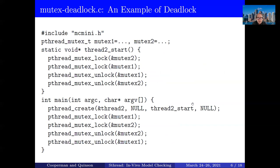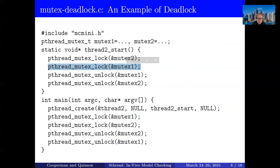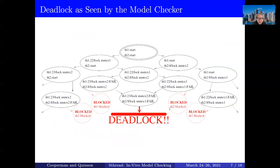A brief reminder of some basics. Here's a simple deadlock example. We have an initial thread that creates a second thread running thread2_start. The second thread decides to lock mutex2, then mutex1. As long as it proceeds in order, everything is good. But suppose it locks mutex2 and then the operating system switches back to thread1. Now thread1 has locked mutex1 and thread2 has locked mutex2. Nobody can proceed because thread2 cannot lock mutex1 and thread1 cannot lock mutex2.